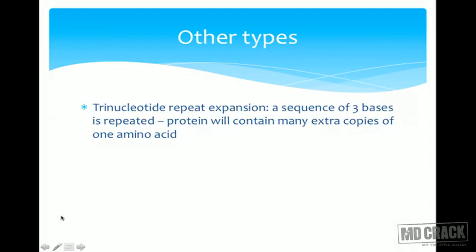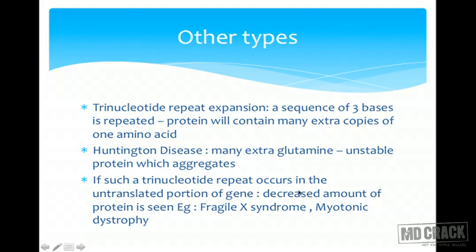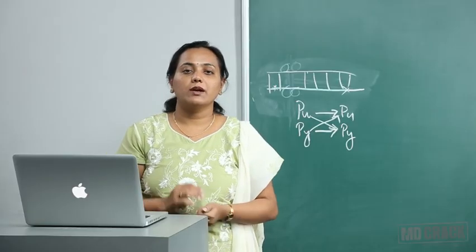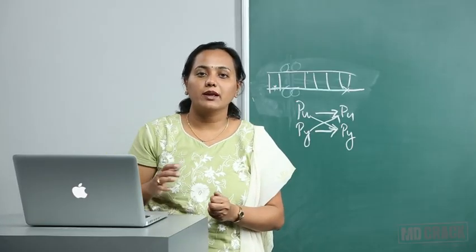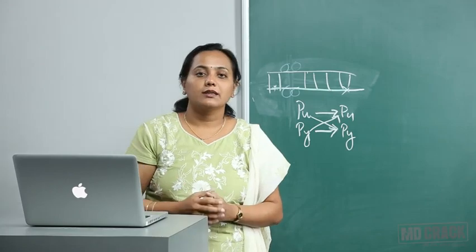Another type is trinucleotide repeat expansion, where a sequence of three bases is repeatedly expanded, causing the protein to contain many extra copies of a single amino acid. In Huntington's disease, many extra glutamine residues make the protein unstable and it aggregates. When trinucleotide repeats occur in the untranslated portion of a gene, decreased amounts of the protein are seen — as in fragile X syndrome or myotonic dystrophy. This concludes DNA repair mechanisms and mutations.